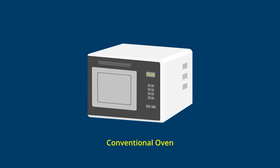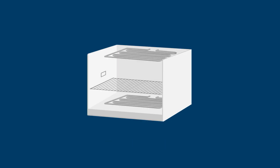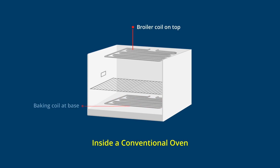The conventional ovens are typically used to bake cakes, pizzas and roasting meat on the rotisserie. It has a fixed broiler coil at the top, a baking coil at the base, and slots in the side walls for the horizontal rotisserie shaft.